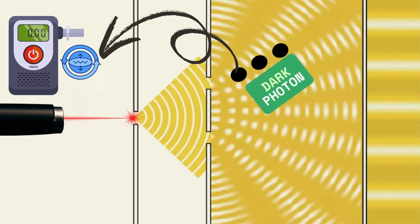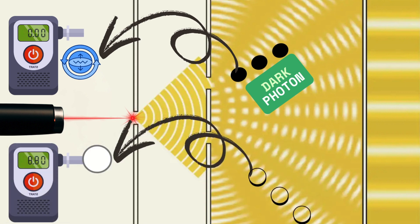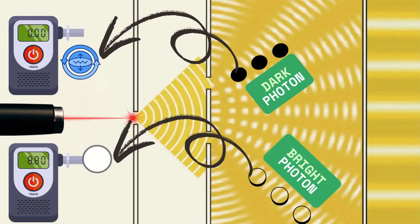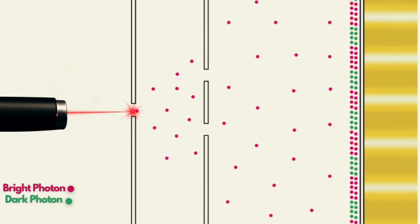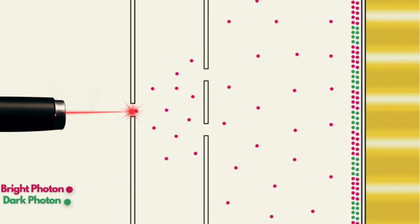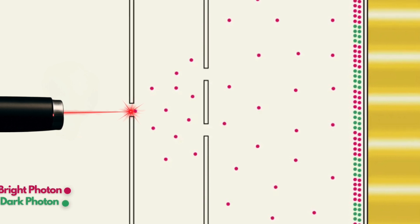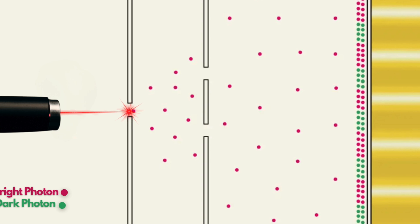These special quantum configurations are called dark states, while those that interact maximally with a detector are referred to as bright states. The scenario you're seeing on the screen right now represents the double-slit experiment explained through this perspective. In regions where photons are in bright states, we see a clear light pattern.